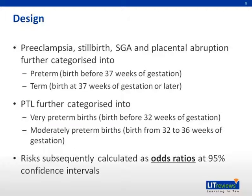Preeclampsia, stillbirth, small for gestational age, and placental abruption were further categorized into preterm — births before 37 weeks of gestation — and term, births at 37 weeks of gestation or later. Preterm labor was further categorized into very preterm births, before 32 weeks of gestation, and moderately preterm births, between 32 and 36 weeks of gestation.